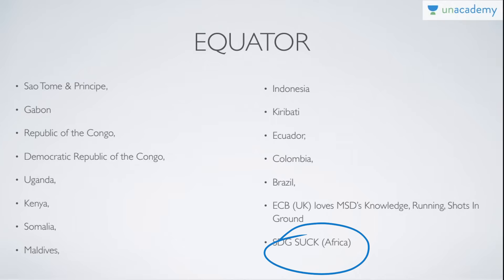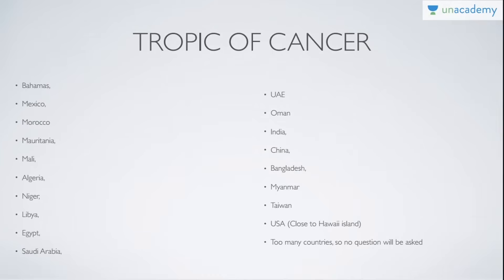When it comes to the Tropic of Cancer, as I've mentioned multiple times, you don't need to remember all the countries except the fact that the Tropic of Cancer passes close to the Hawaii Island, so there is some part of the USA which is below the Tropic of Cancer. Just remember there are a lot of countries in northern Africa crossed by it.